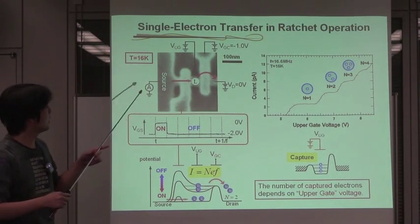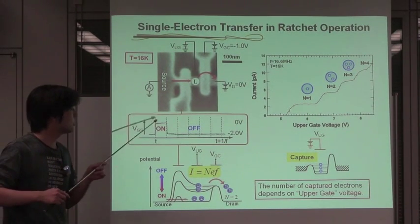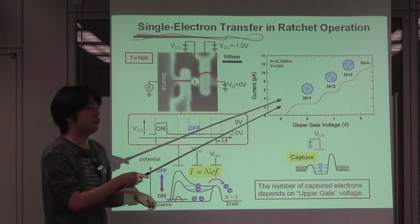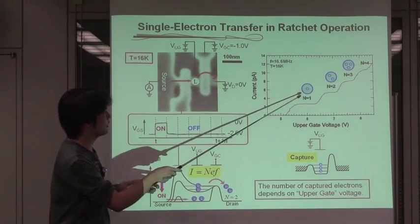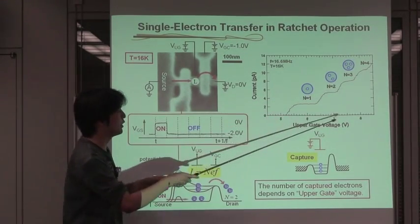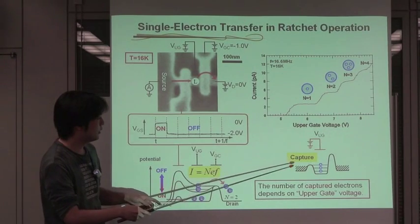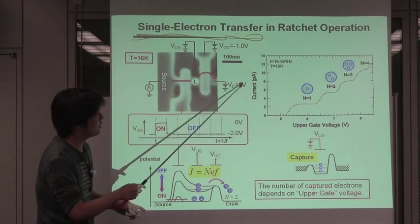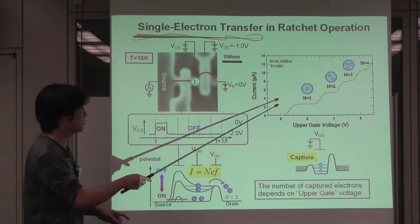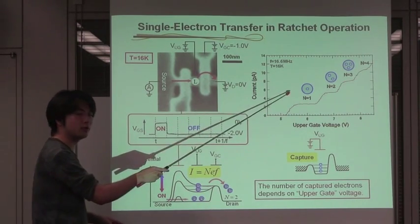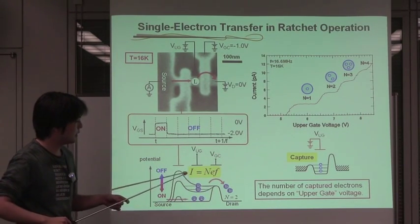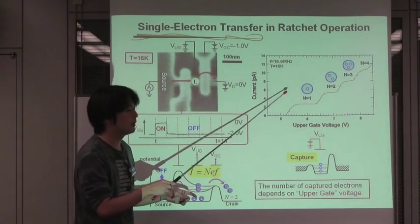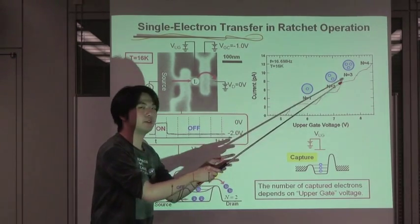We measured output current with an RF pulse train to the left-side gate, like this. This is the experimental result. As you can see, the clear quantization of the current plateau can be clearly observed as a function of the upper gate voltage, which is used for tuning the quantum-dot potential. The current vertical axis showing the RF current is equivalent to the captured electron number by normalizing the RF current by EF. So on the quantized plateau, the single electron number can be controlled to be around one, two, or three respectively.